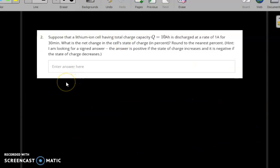In this problem, we have a different way of finding the change in the state of the cell. The question reads: suppose a lithium cell having a total charge capacity of 10 ampere-hours is discharged at a rate of 1 ampere for 30 minutes. What is the net change in the cell's state of charge? Round the answer to the nearest percentage.